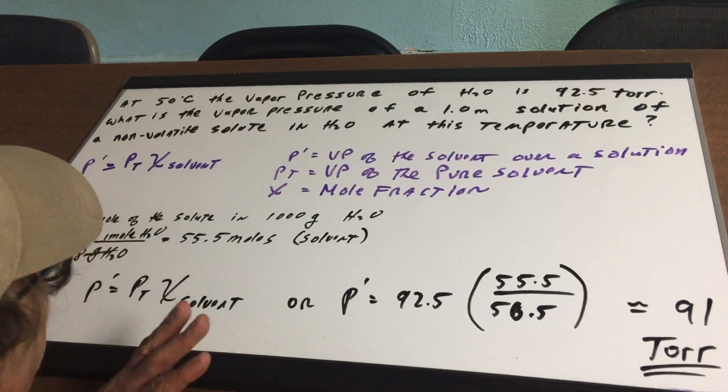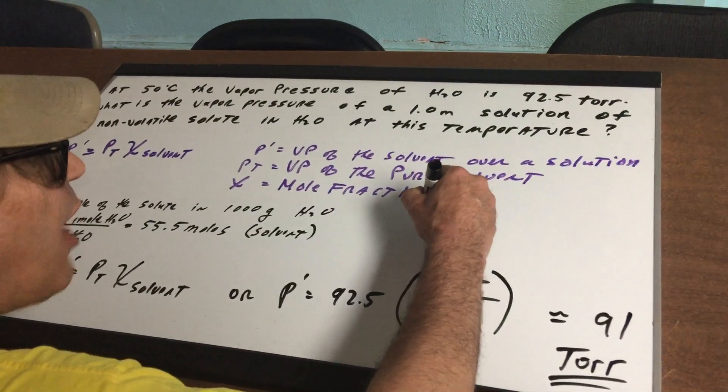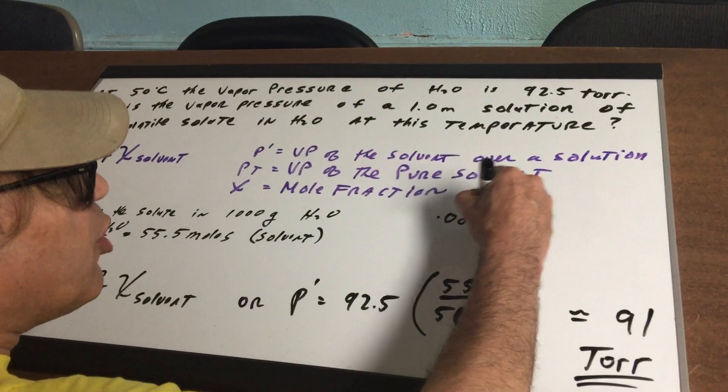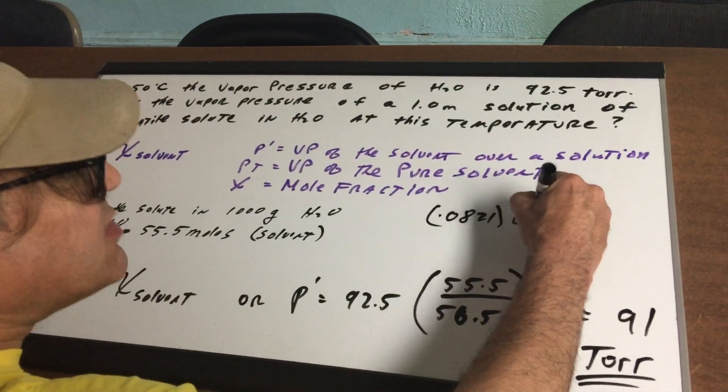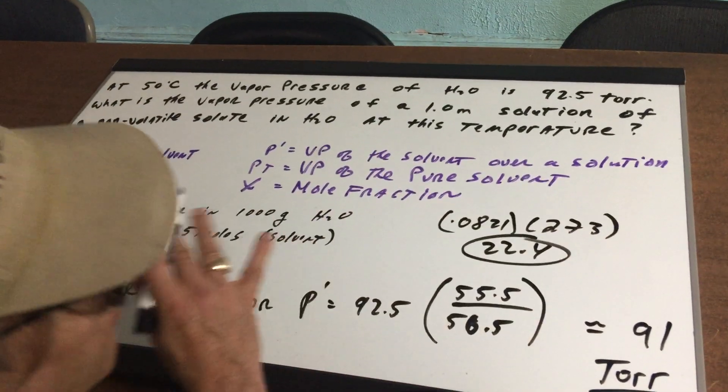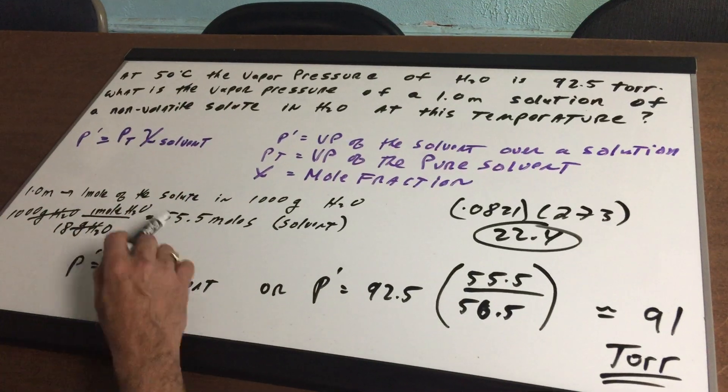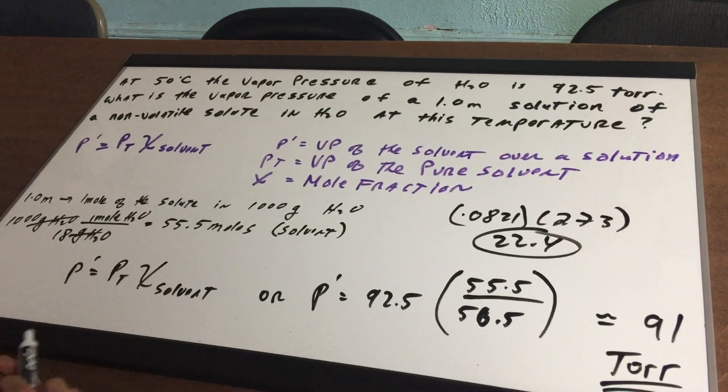I want you to never forget that a thousand divided by 18 is 55.5. That is a calculation that just comes in handy, just the way you would know 0.0821 times 273, when you do gas laws, is 22.4. And you can do that at blitzing speed. I want you to never forget a thousand over 18 is 55.5.